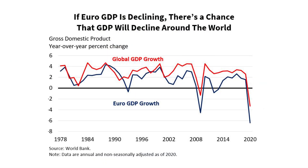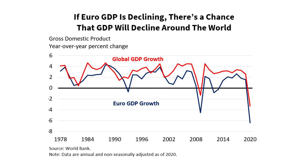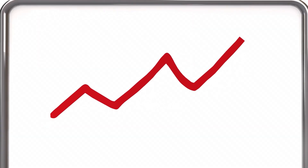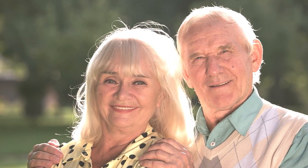If GDP in the EU is declining, there is a chance that GDP will decline around the world due to the influence Euro consumers, businesses, and investors have, as the Euro economy comprises 15% of global GDP. In addition to higher stock prices and interest rates, higher GDP growth likely leads to increased happiness and prosperity.